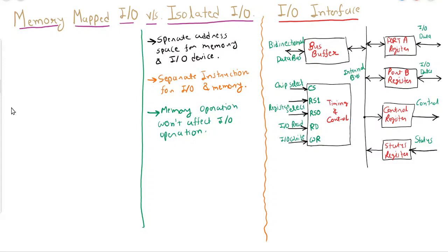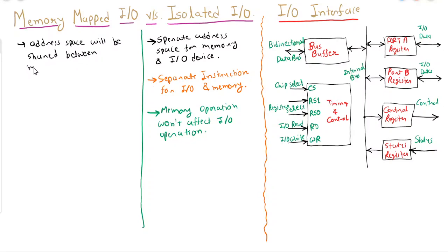Now, what is Memory Mapped IO? In Memory Mapped IO, the address space is shared between memory and IO devices. Previously in Isolated IO the address spaces were separate, but in Memory Mapped IO we have one common address space shared between memory and IO devices.